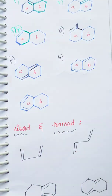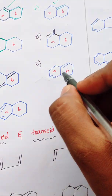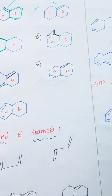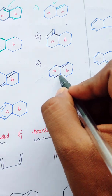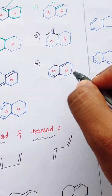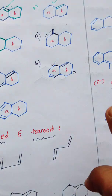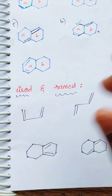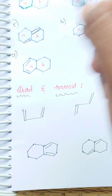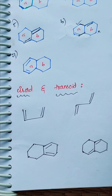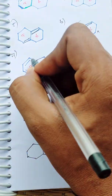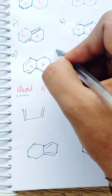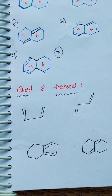For the fifth and sixth compounds, ring A has an exocyclic double bond. Now come to the seventh one — in this case, for ring A, there is no exocyclic double bond.